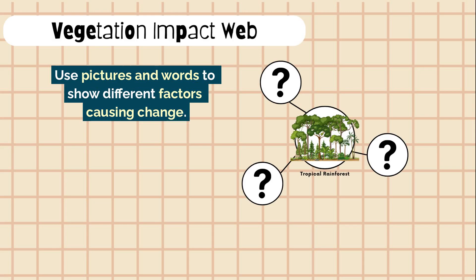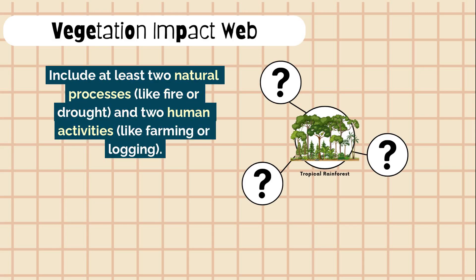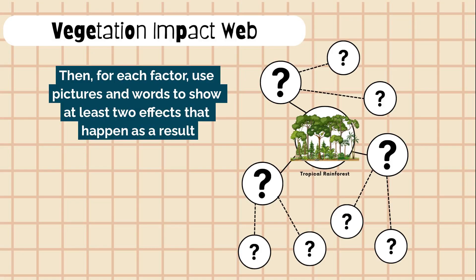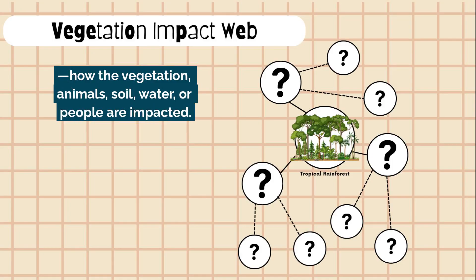Use pictures and words to show different factors causing change. Include at least two natural processes, like fire or drought, and two human activities, like farming or logging. Then, for each factor, use pictures and words to show at least two effects that happen as a result — how the vegetation, animals, soil, water, or people are impacted.